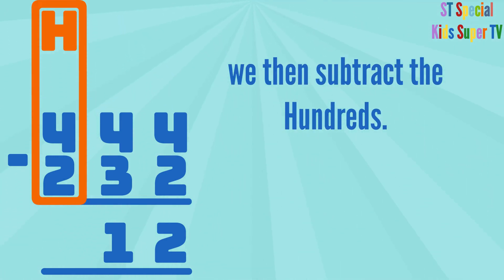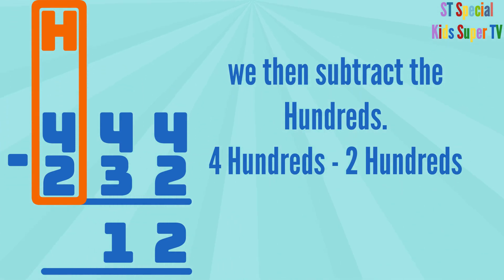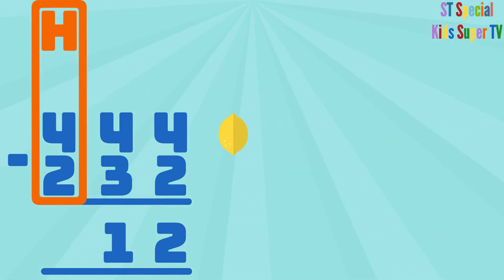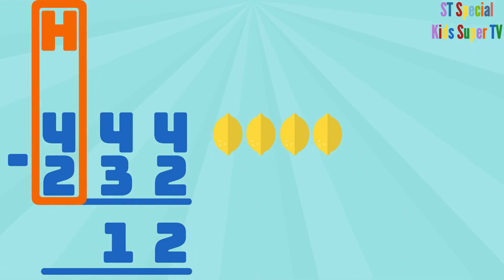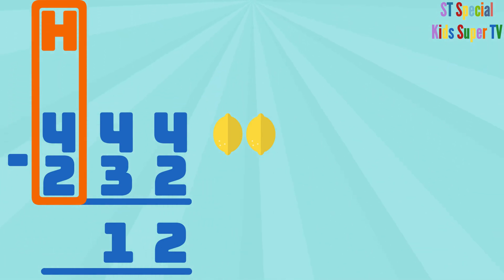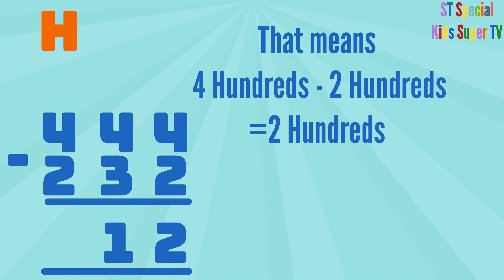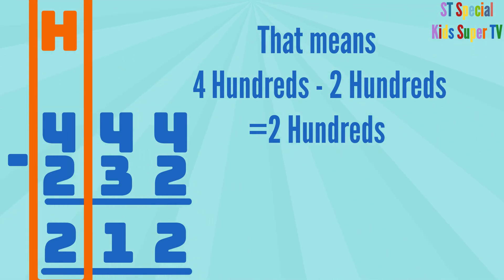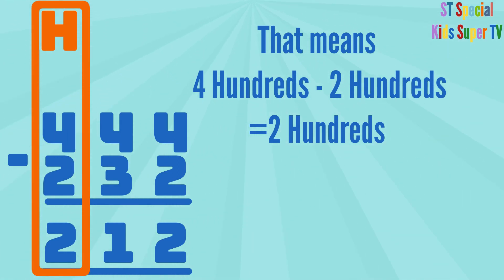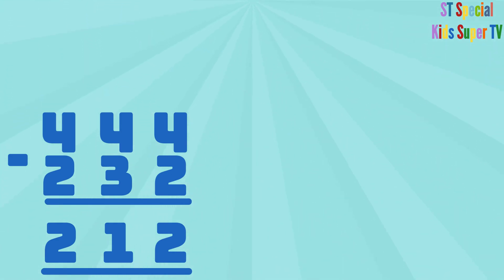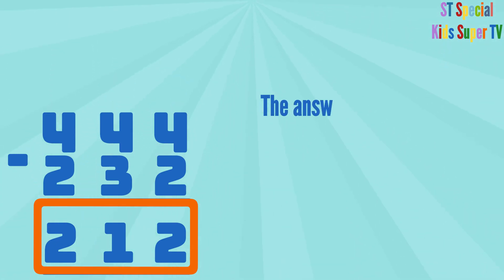We then subtract the hundreds: 4 hundreds minus 2 hundreds. 1, 2, 3, 4 lemons minus 1, 2 lemons equals 1, 2 lemons. That means 4 hundreds minus 2 hundreds equals 2 hundreds. So we write the 2 under the hundreds column. Therefore, 444 minus 232 equals 212. So the answer to our subtraction problem is 212.